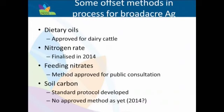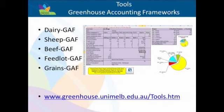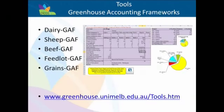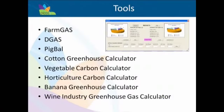Things we can do now for methane abatement include improving diet quality and supplements, improving weaning and branding rates, and managing animal numbers to reduce unproductive animals. Medium term, there are animal and plant breeding options, and longer term, microbial manipulation. For nitrous oxide, there's best management practices around nitrogen fertiliser rate, source, timing and placement. Soil and water management, managing compaction and irrigation, and animal management - balancing the protein to energy ratio in diets to reduce excess nitrogen being excreted - are also important. By mid-year a methodology for soil carbon should come through. There are also various accounting tools available at the tool site for those who want to get a profile of their particular farm.